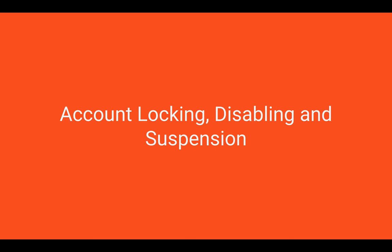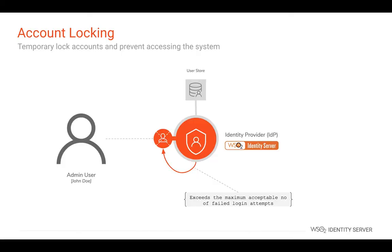Let's move on to account locking, disabling, and suspending functionality in WSO2 Identity Server. Privileged users can temporarily lock suspicious user accounts and prevent users from logging in. These locked user accounts can only be unlocked by privileged users. Privileged users can also define the maximum number of failed login attempts the system accepts. When a user exceeds this maximum, the user account will be automatically locked. Privileged users can also define how long the account should remain locked.